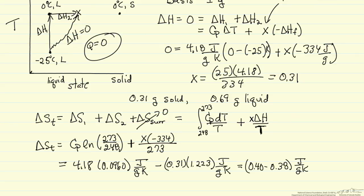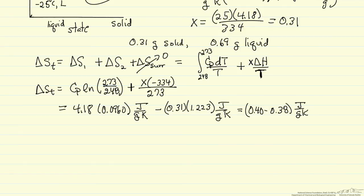and therefore the total entropy change is 0.02 joules per gram per Kelvin. It's important to point out this is positive because this is an irreversible process, and we calculate the total entropy change, so the system plus the surroundings, total entropy change should be greater than 0.